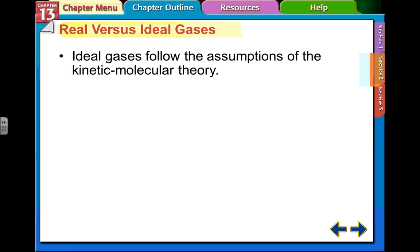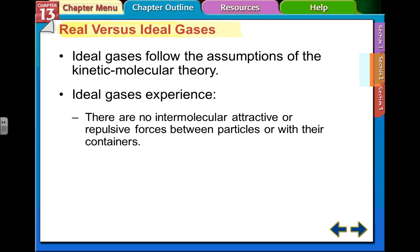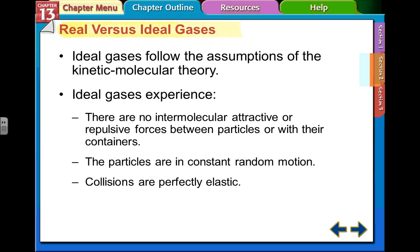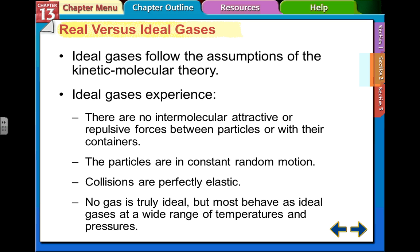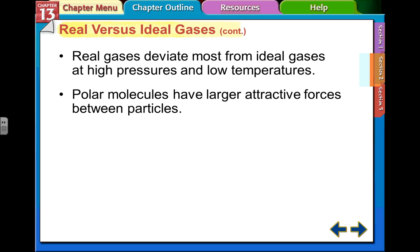Real versus ideal gases, some of the things that are the same, and some of them are different. So, ideal gases follow the assumptions of the kinetic molecular theory, right? They're all bounced around in elastic collisions. They don't interact with each other. They're far apart. And these are the things that ideal gases experience. There's no intermolecular force, attractive or repulsive forces between the particles or containers. So, they're not stuck to each other or the containers. They're in constant random motion. And all the collisions are perfectly elastic. They don't lose any energy colliding into each other or into the walls. Like I said at the beginning, no gas is truly ideal under all these conditions, but most behave as ideal gases for the amount of measurements we can do under a wide range of temperatures and pressures.